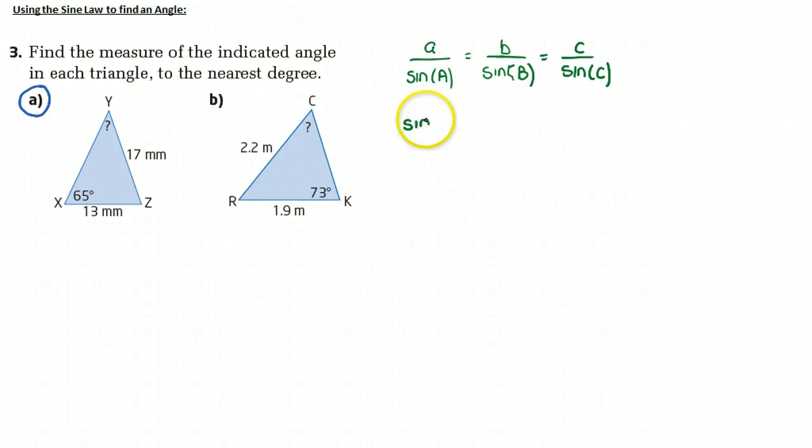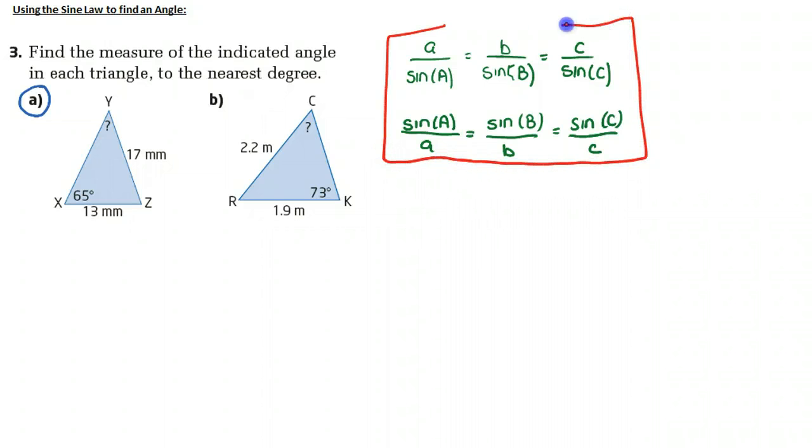So if I take the reciprocal of each of these, I can rewrite this as sine A over A is equal to sine B over B, which is equal to sine C over C. And in this case, where I'm actually trying to solve for an angle as opposed to a length, this second form is going to make the algebra a little bit more straightforward.